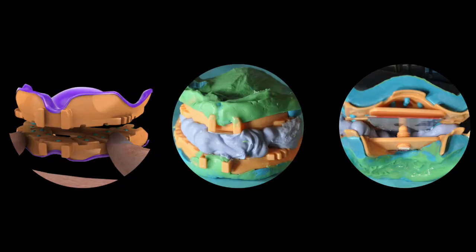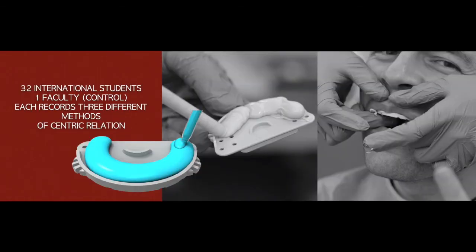To summarize, this is the edentulous patient CR registration using the tray — maxillary tray and mandibular tray — after identifying the CR position and taking the bite registration. A study was conducted to test which methods are accurate in student hands.